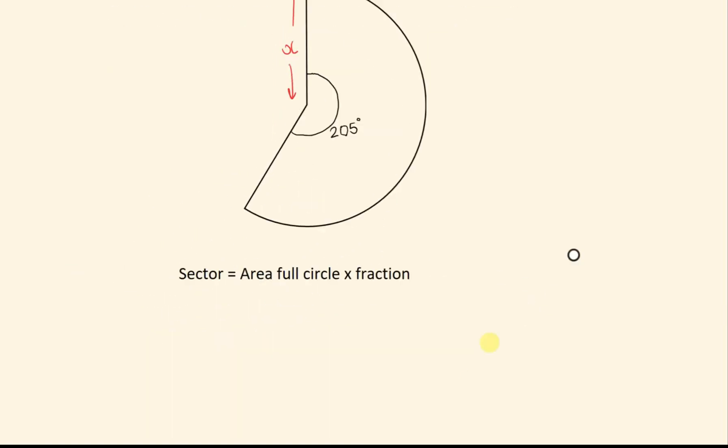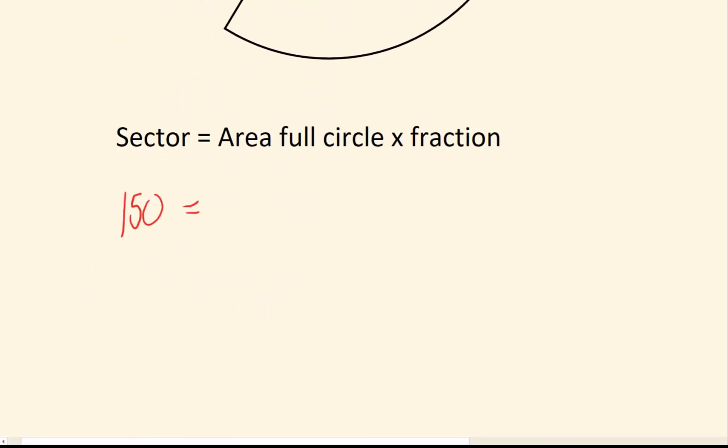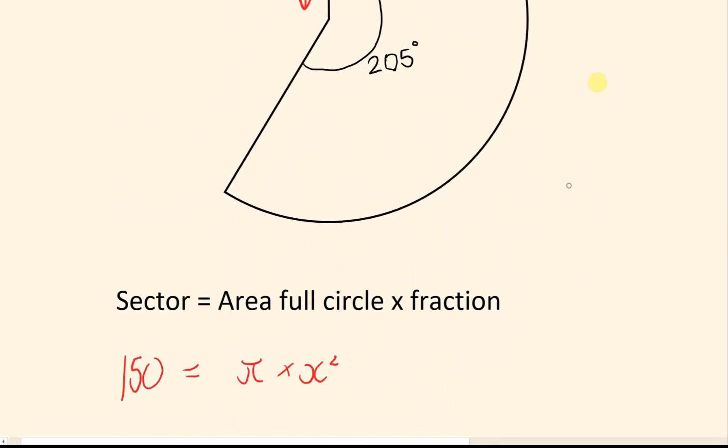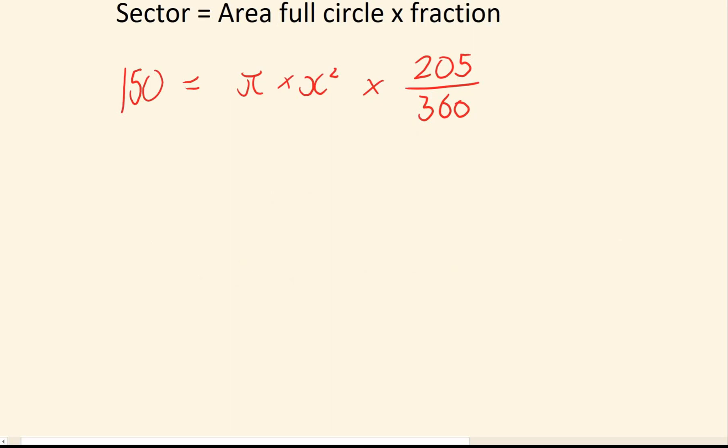So the sector is 150. The area for a full circle is going to be pi times r squared. In my notation, this is pi times x squared, because we can see here that x is the radius. And lastly, the fractional circle: we have 205 degrees, and it's out of 360 altogether.